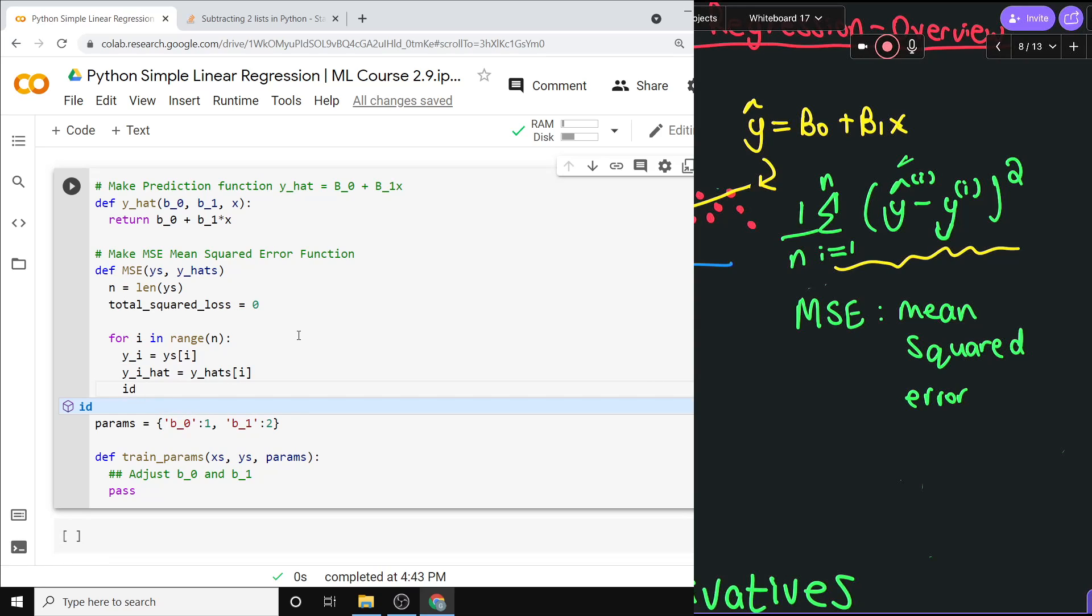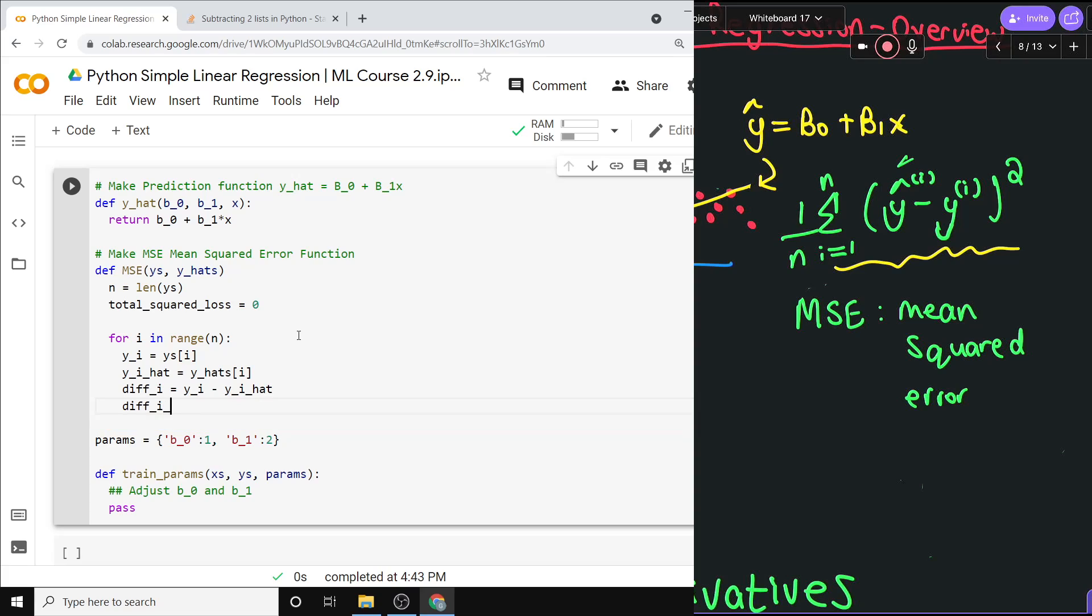We could calculate their difference because we need to get that. Difference i is equal to, and it doesn't matter the order, because we're going to square it afterwards to make it positive anyway. So it's yi minus yi hat. And yes, this is actually backwards from what I wrote in the math, but it's exactly the same thing. Then difference i squared, so we need to square this thing, is equal to diff i times diff i. That's all squaring is. It's multiplying it by itself.